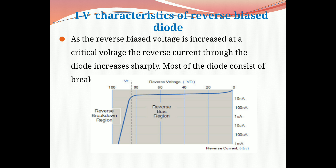As the reverse bias voltage is increased, at a critical voltage the reverse current through the diode increases sharply. Most diodes have a breakdown voltage of more than 50 volts.